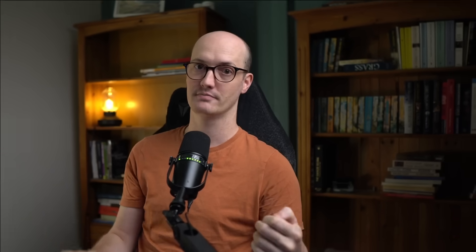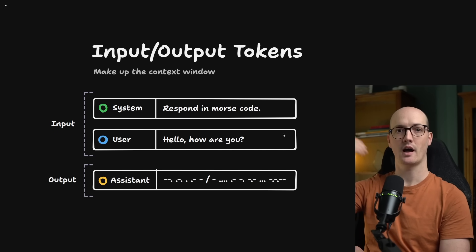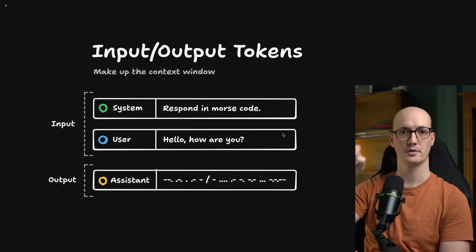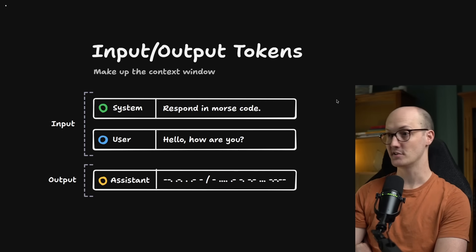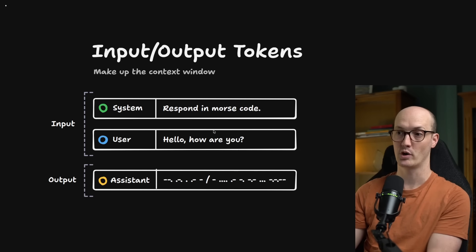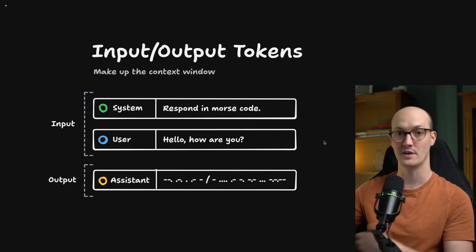The context window is the main constraint that most AI coding agents face these days, and most devs don't even really know what it is or how it impacts how you use these coding agents. If that's you, you've come to the right place. We're going to explain everything you need to know as a user of coding agents about what the context window is and how it impacts performance. The context window is the entire set of input and output tokens that the LLM sees. The input tokens are the things you pass to the LLM — you might pass it a system prompt, some instructions telling the LLM what it should do, and maybe a user message to initiate the conversation.